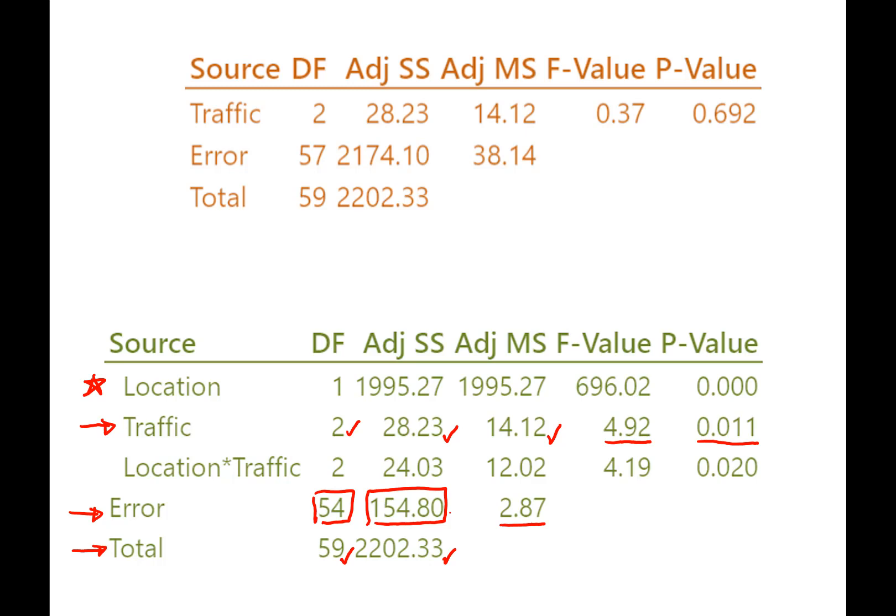So that's why our error line has changed. Okay, so this change in the error line seems to be really important in determining what's going on with our traffic being not significant in the single factor ANOVA and significant in our multi-factor ANOVA.